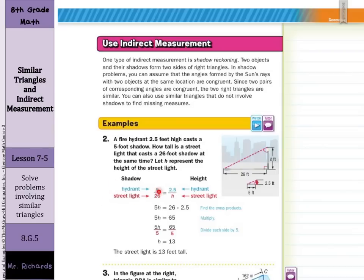We have our shadow on the left side of our proportion and our height on the right side. We have the hydrant on top and the street light on the bottom. Where our hydrant's shadow was five feet, the street light shadow was 26 feet. And that's going to be set equal to, for our proportion, the height of the hydrant was two and five tenths, or two and a half feet. In the height of the street light we see,